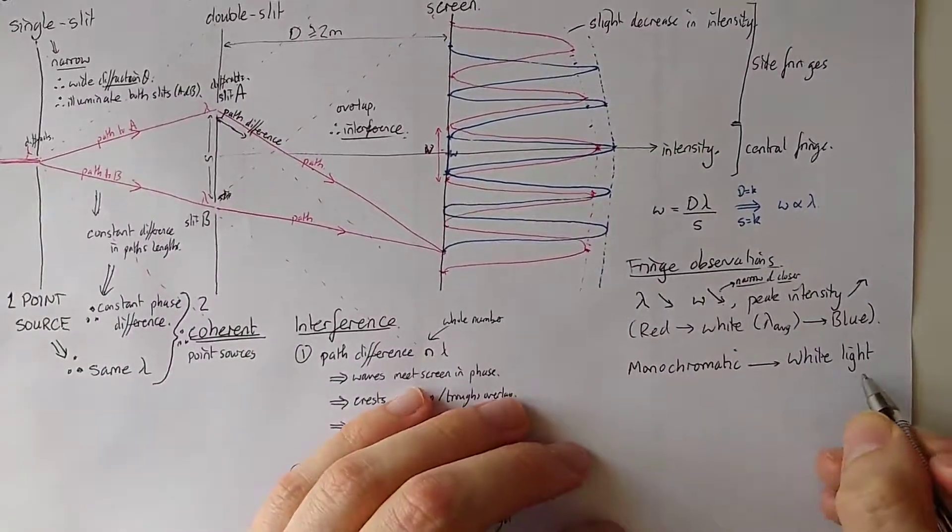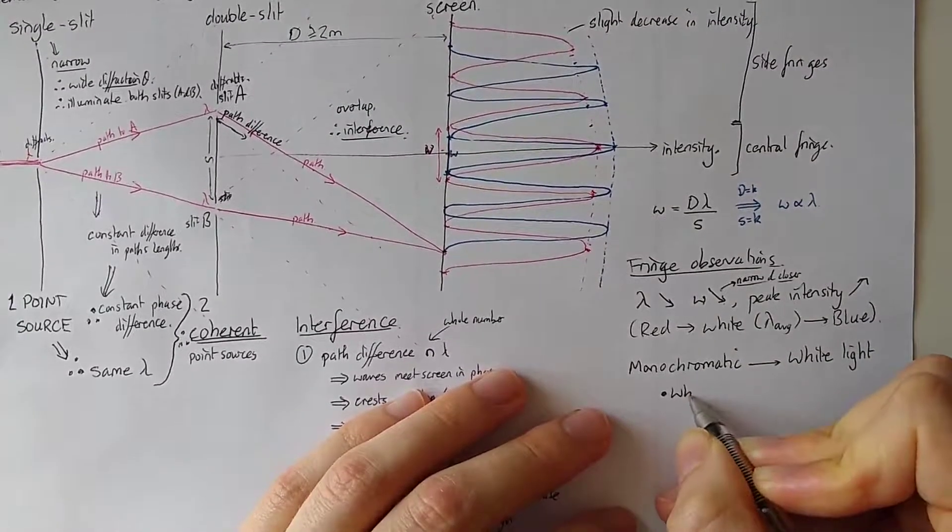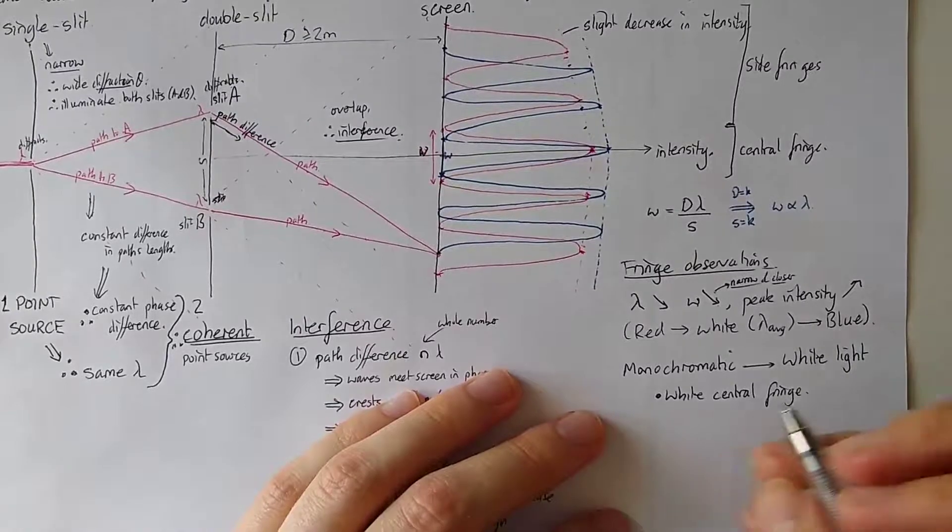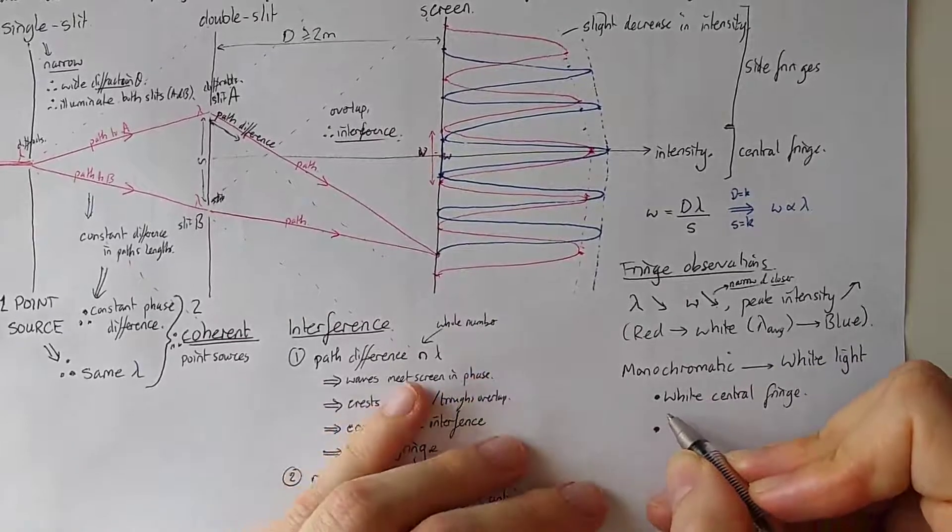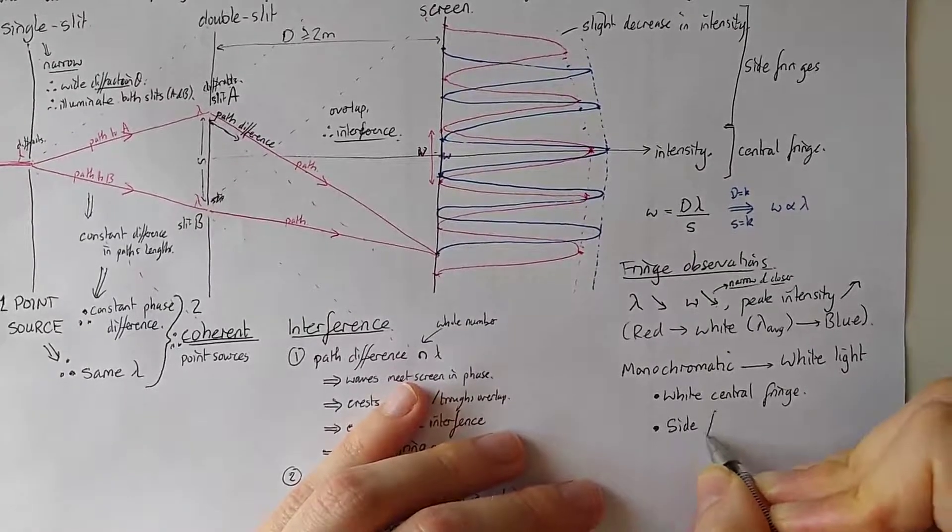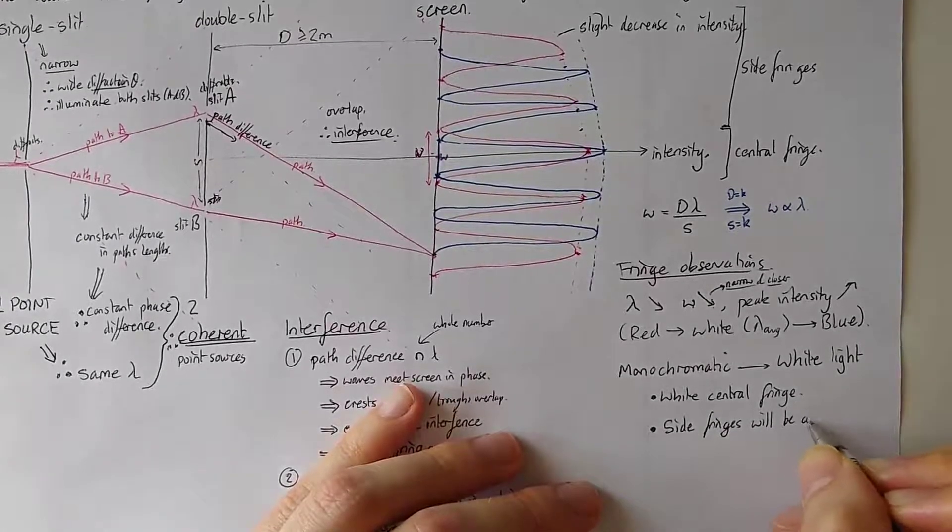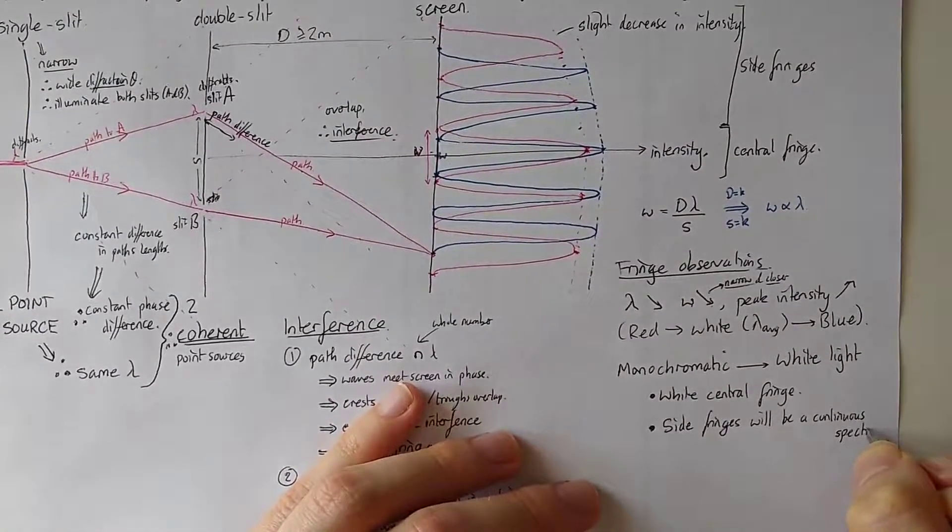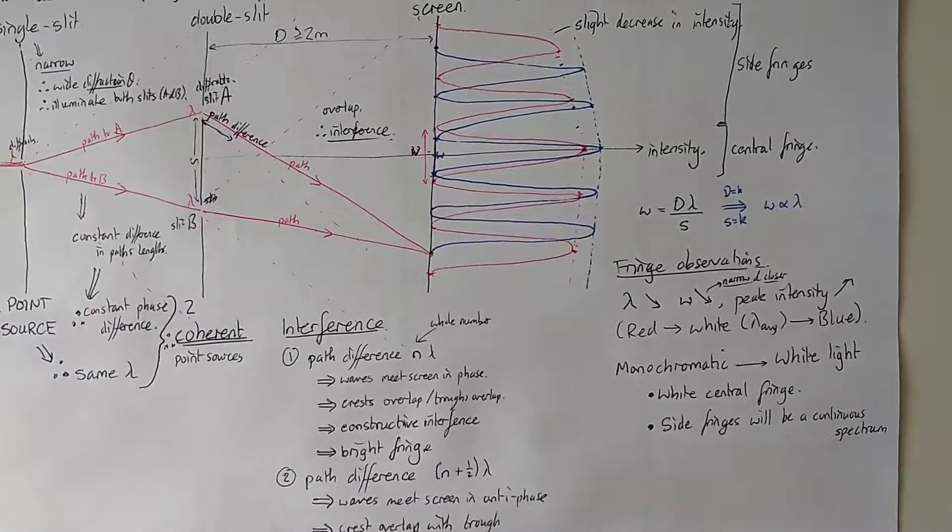So the first one that's super obvious is we would have a white central fringe instead of whatever it was before. The other thing is that the side fringes will become a spectrum. We'll look at what that means in a moment and why that happens. A continuous spectrum. We use the word continuous just so that we're not talking about a line spectra. Let's have a look about what that's about.